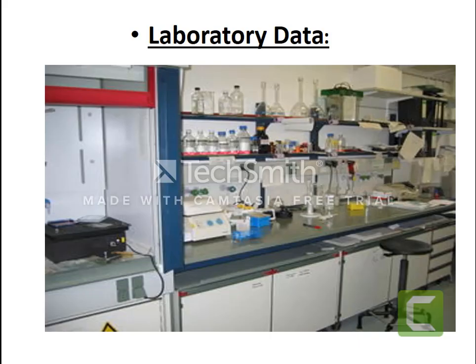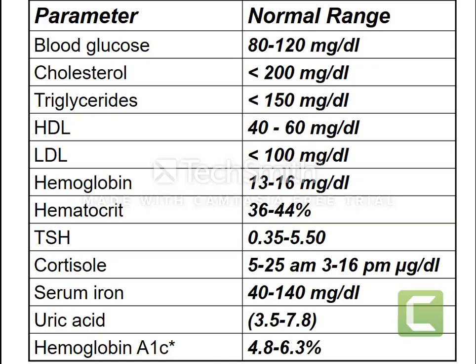Some laboratory data are also used for the diagnosis of obesity. Parameters include blood glucose levels, cholesterol levels, triglyceride levels, HDL, LDL, hemoglobin, hematocrit, TSH, cortisol, serum iron, and uric acid. The most important parameters for diagnosis are blood glucose, cholesterol, triglycerides, HDL, and LDL — these parameters are highly responsible for measurement of obesity.